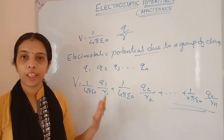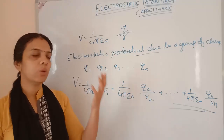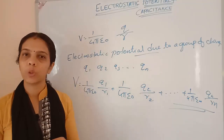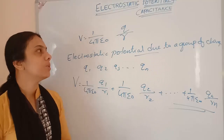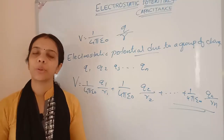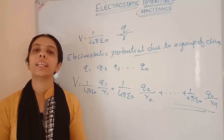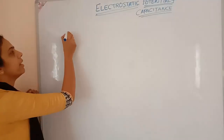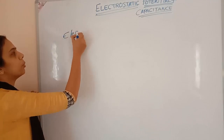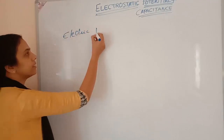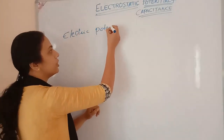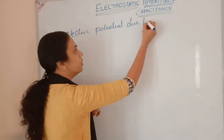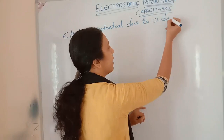Since potential is a scalar quantity, we simply add all the individual potentials. The unit of potential is the volt, which we also defined in the last class. Next, we are going to find out the electric potential due to a dipole.